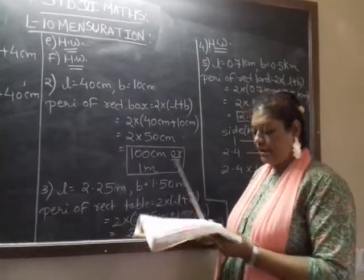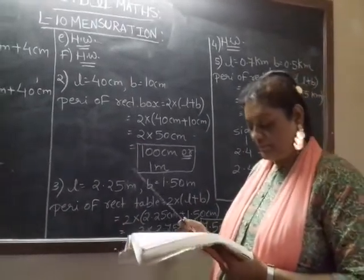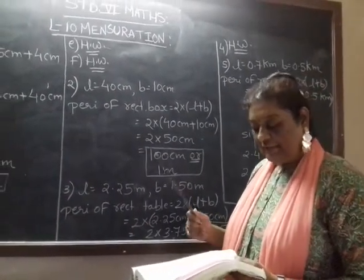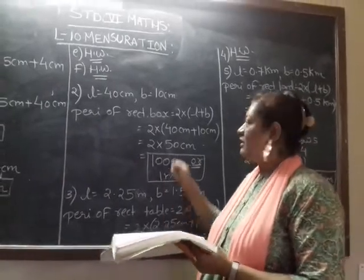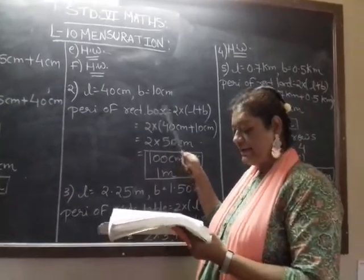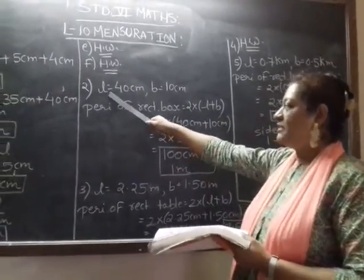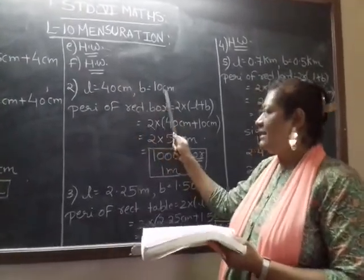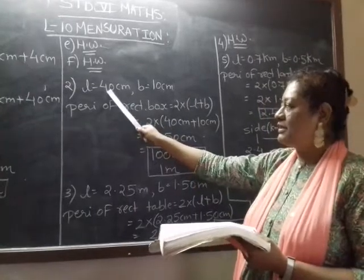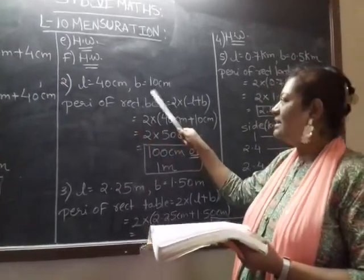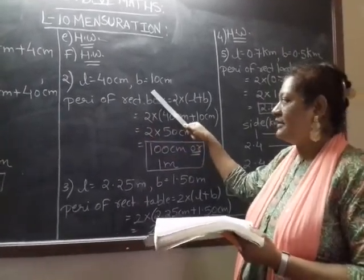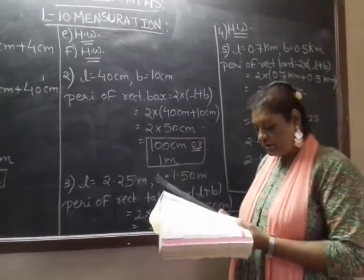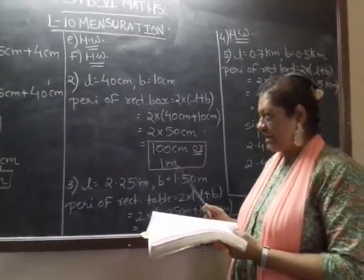Moving on to question number 2. The lid of a rectangular box of sides 40 centimeter by 10 centimeter. So 2 measurements are given, 40 by 10 centimeter. So 40 centimeter will be your length and 10 centimeter will be your breadth. And this is a rectangular box.